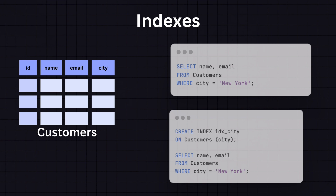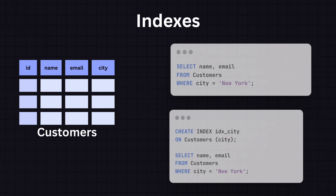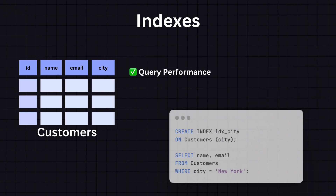If we create an index on the city column and then the same query is executed, the database uses the index to quickly find all customers in New York without scanning the entire table. The difference in performance will be noticeable with large datasets. For small tables the impact might be very tiny or even negative due to the overhead of maintaining the index. The primary reason for using indexes is to speed up query performance especially for large tables — without an index the database has to perform a full table scan, which is a slow operation.